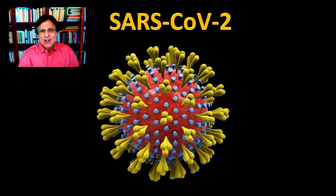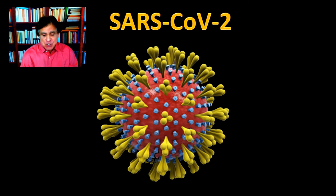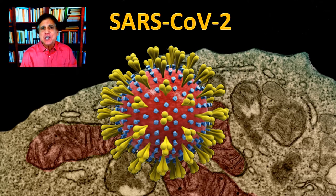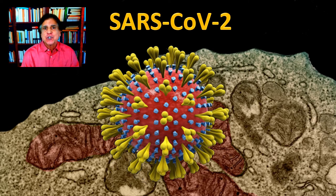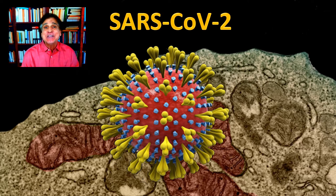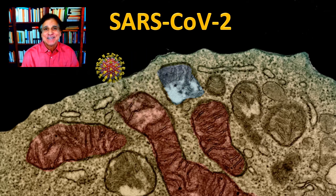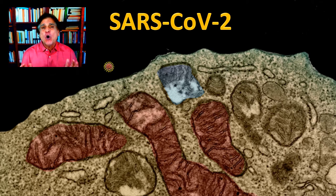Let's look at the scale of this virion as compared to the host cell which it might infect. Here we have the virus particle, and in the background we have a piece of a cell which is about the same size as the respiratory cells attacked by SARS-CoV-2. If we were to show the actual relationship and size, we'd have to take that virus and shrink it down. The host cell is much, much larger than the virus particle.